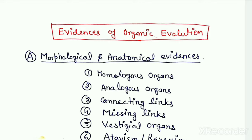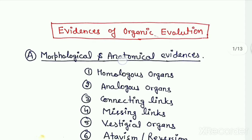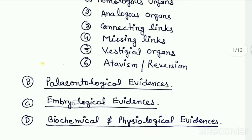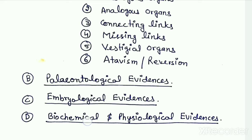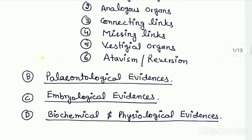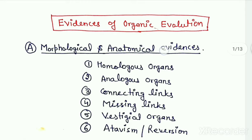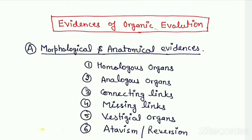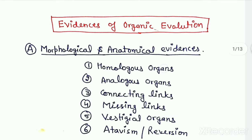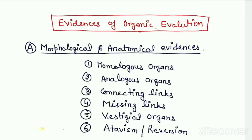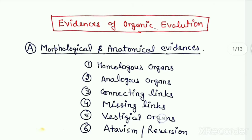All these evidences are broadly categorized in four categories: morphological and anatomical evidences, paleontological evidences, embryological evidences, and biochemical and physiological evidences. In the first category of morphological and anatomical evidences we have already studied homologous organ, analogous organ, connecting links and the missing links. Today we will continue with the next type of evidences which are the vestigial organs.